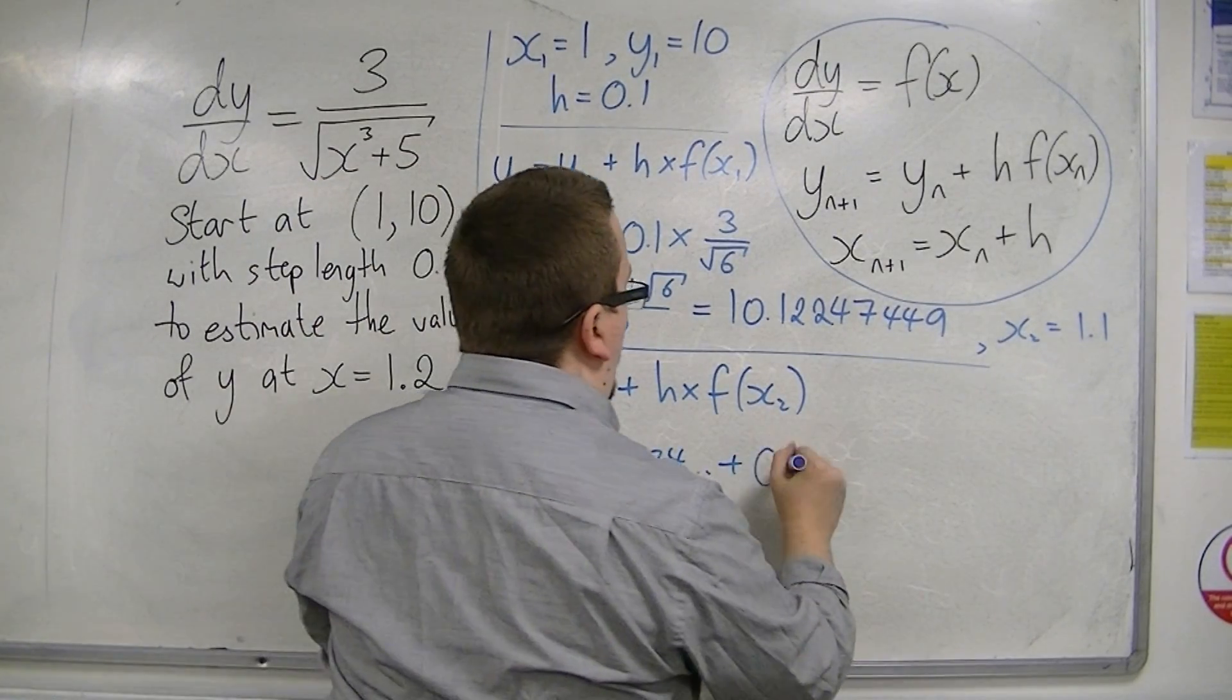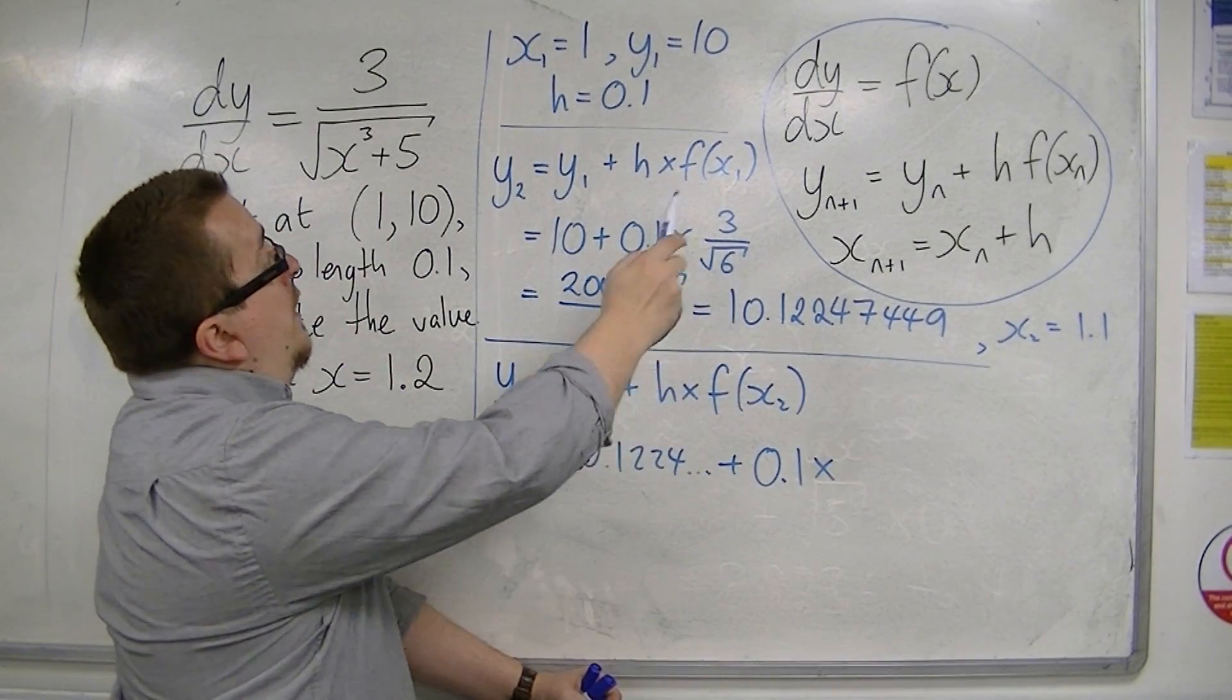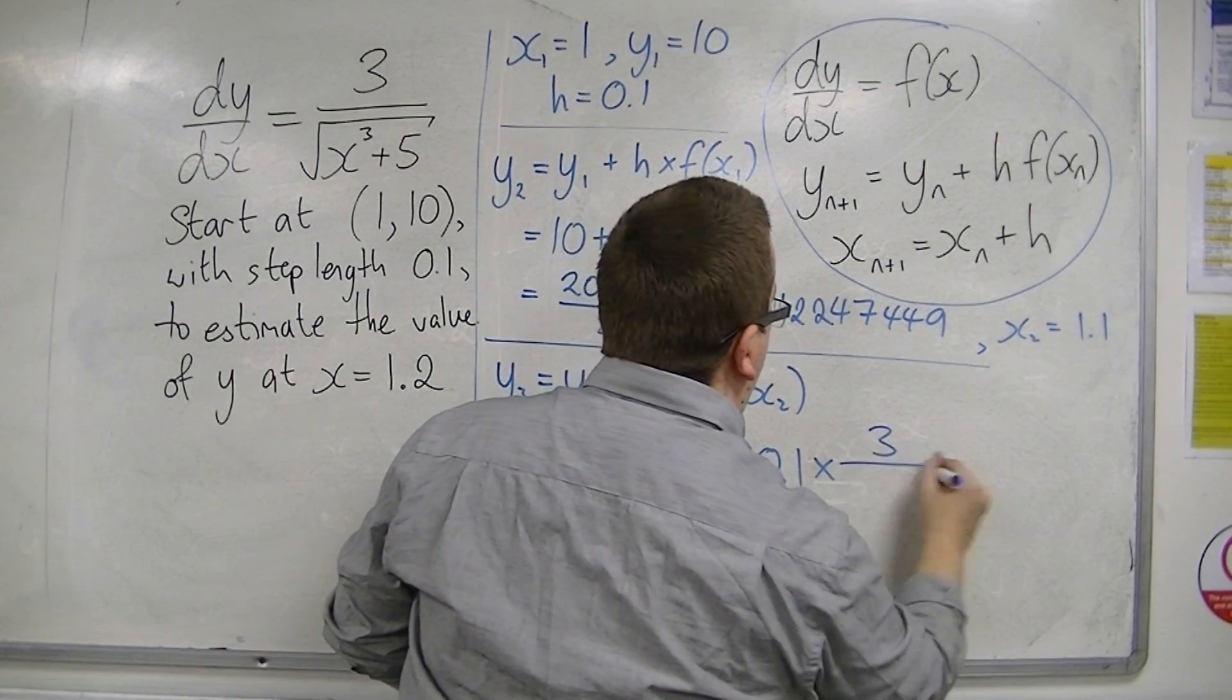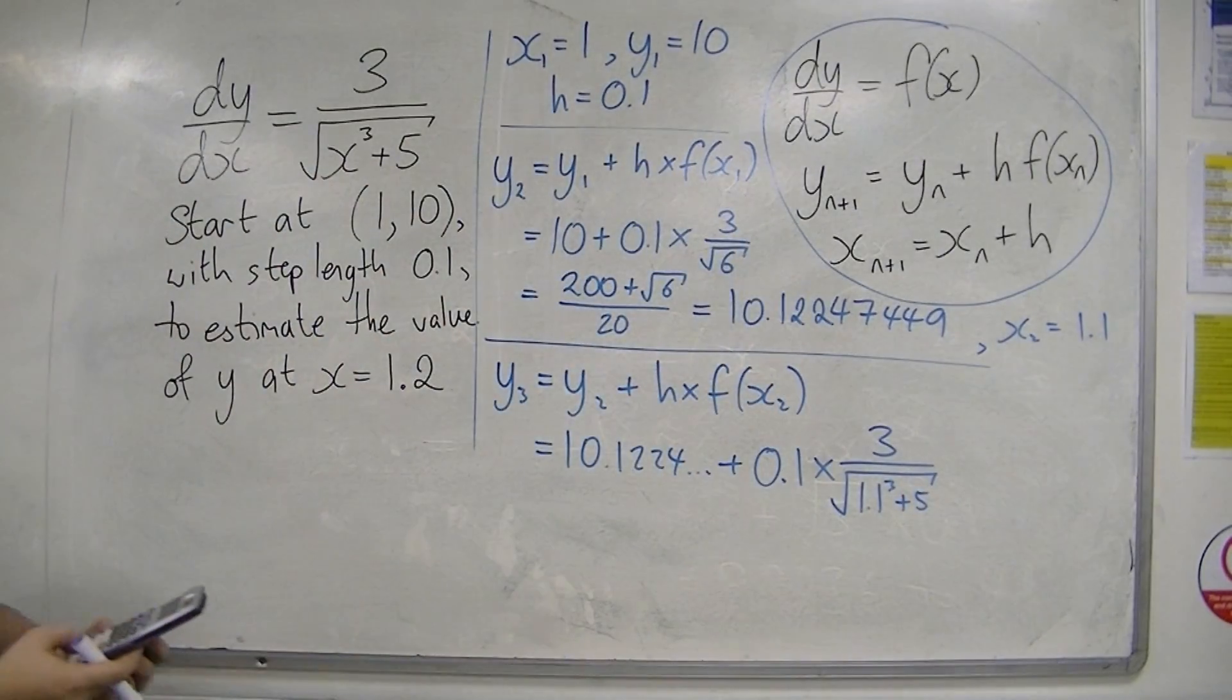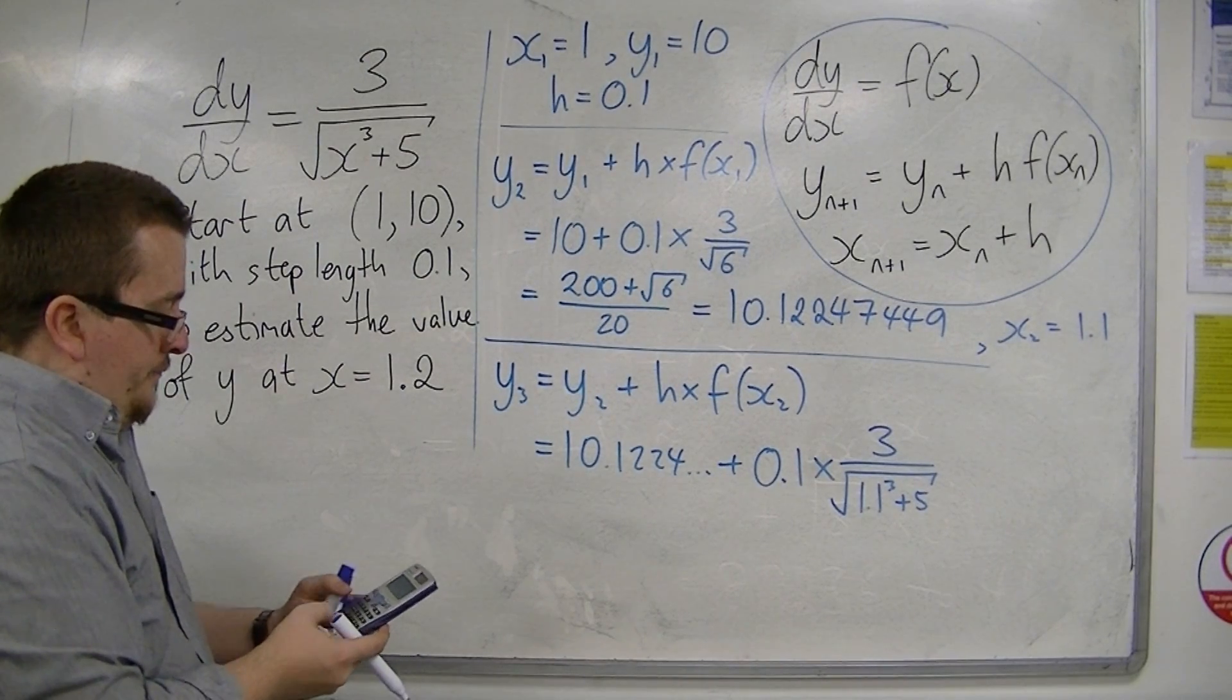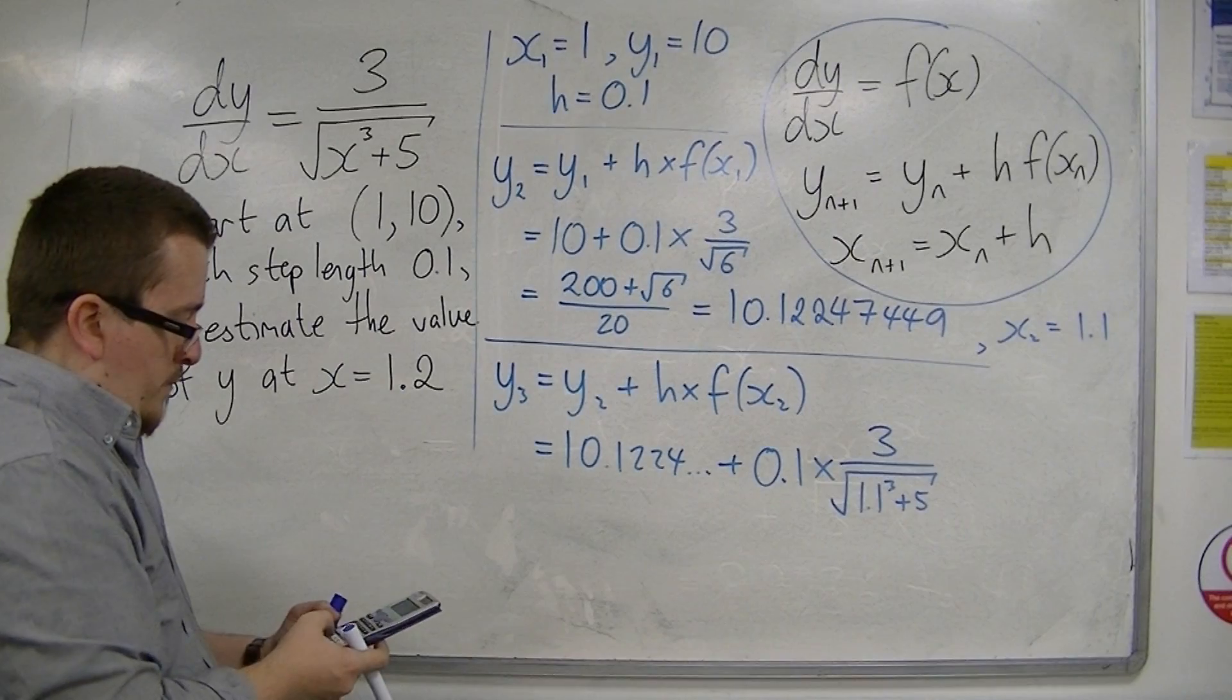Plus 0.1 times f(x₂). So substituting 1.1 into this. So 3 over the square root of 1.1³ plus 5. So on your calculator, 1.1 cubed plus 5.